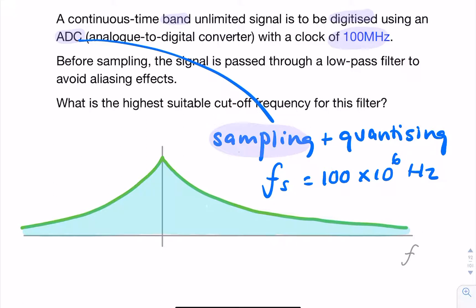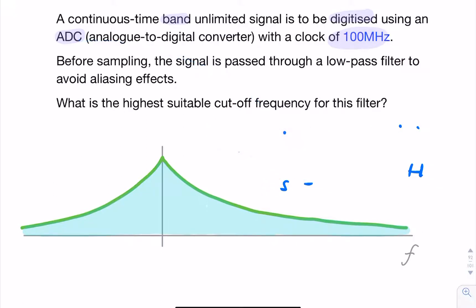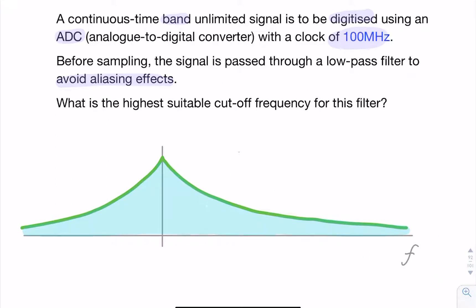So how is that going to help us? We're told that this band unlimited signal is passed through a low-pass filter. Why do we do that? It's to avoid aliasing, because if we're going to use all of the frequency axis, there's going to be some overlap. The low-pass filter is chosen so that after filtering and after sampling, what we have is critical sampling.